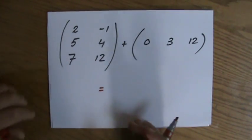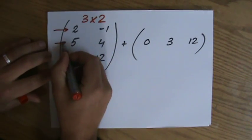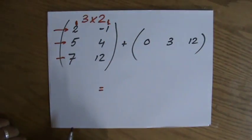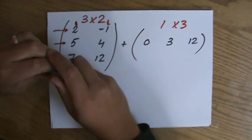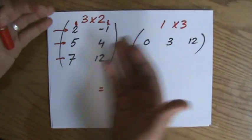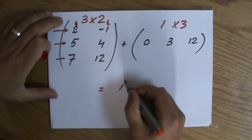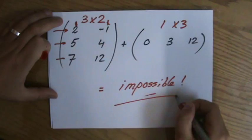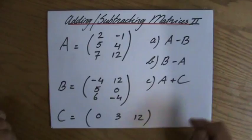The order of matrix A is 3 by 2—3 rows and 2 columns. And the order of matrix C is 1 by 3. I can only add and subtract matrices that have the same order. These positions do not relate. So I could just say here: impossible. It is not possible to add or subtract matrices which do not have the same order.